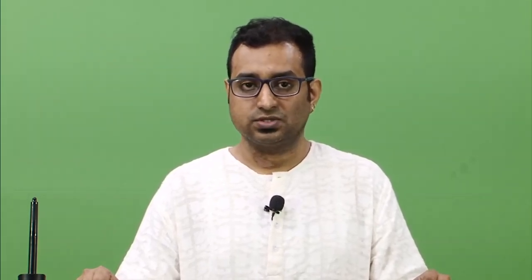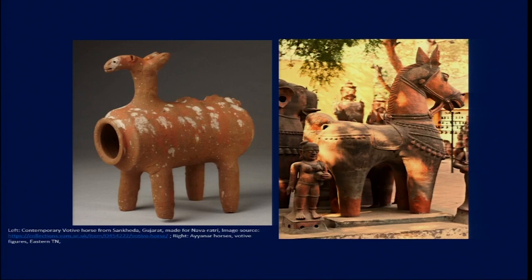If we see the images on screen, the image on the left side is from Sankhera — it is a horse. This horse is very simplistic, and the degree of simplicity actually draws our attention to some of the images we have already studied in the Harappan and Indus Valley context. This image was made in the 1970s in Gujarat and was a votive item used during the Navaratri festival. We can imagine that this ritualistic use of these images that we have seen in earlier times — in the third and second millennium BC — is something that is still relevant for the Indian population and Indian societies.